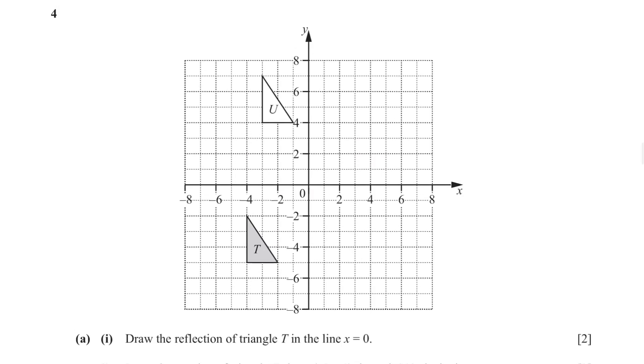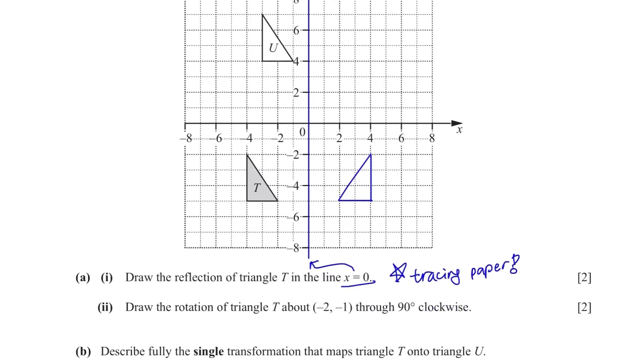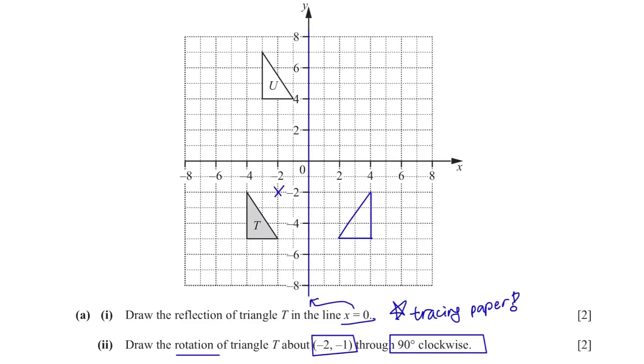Question 4. Part A. Draw the reflection of triangle t in the line x equals to 0. You are allowed to use a tracing paper so go ahead, draw triangle t on your tracing paper and flip to see where it lands. It should be here. Draw the rotation of triangle t about negative 2, negative 1, 90 degrees clockwise. Again, use the tracing paper and rotate it. It's too hard to imagine the rotation part.